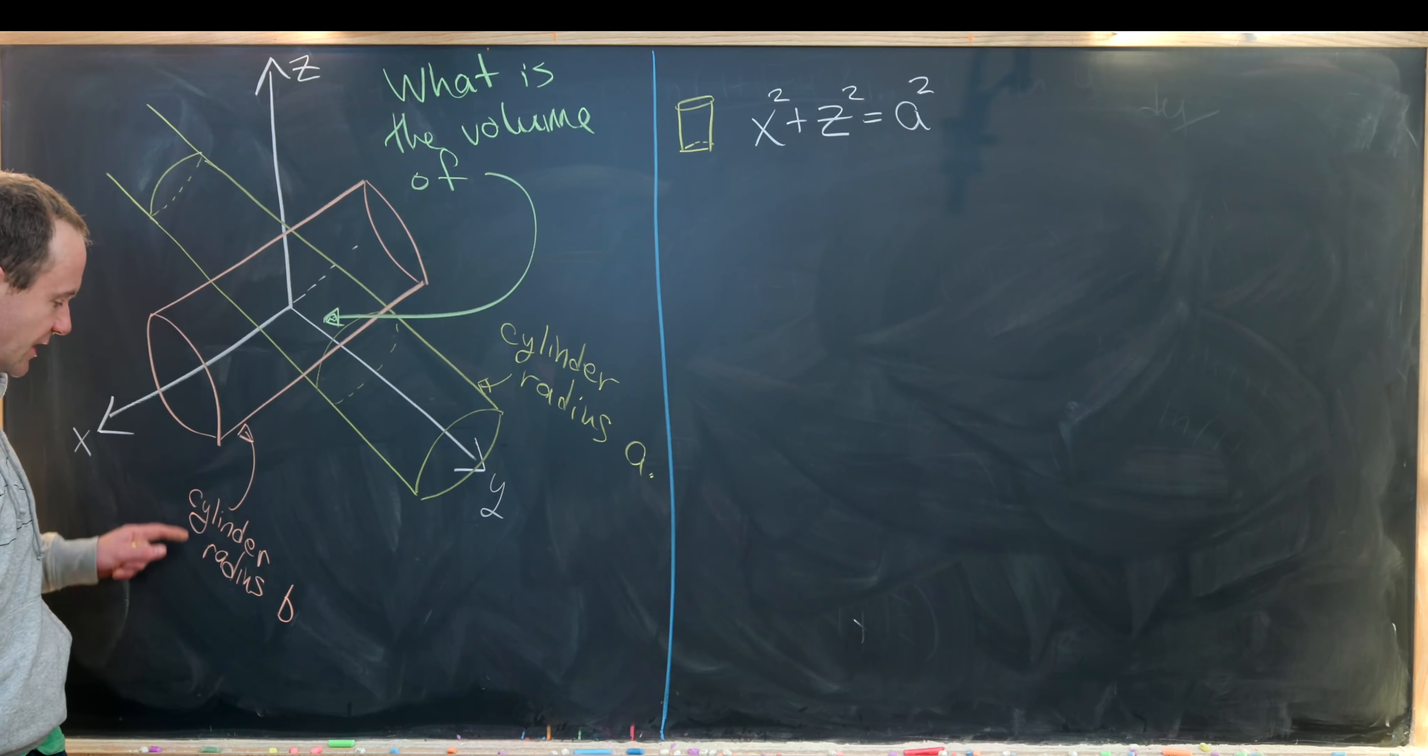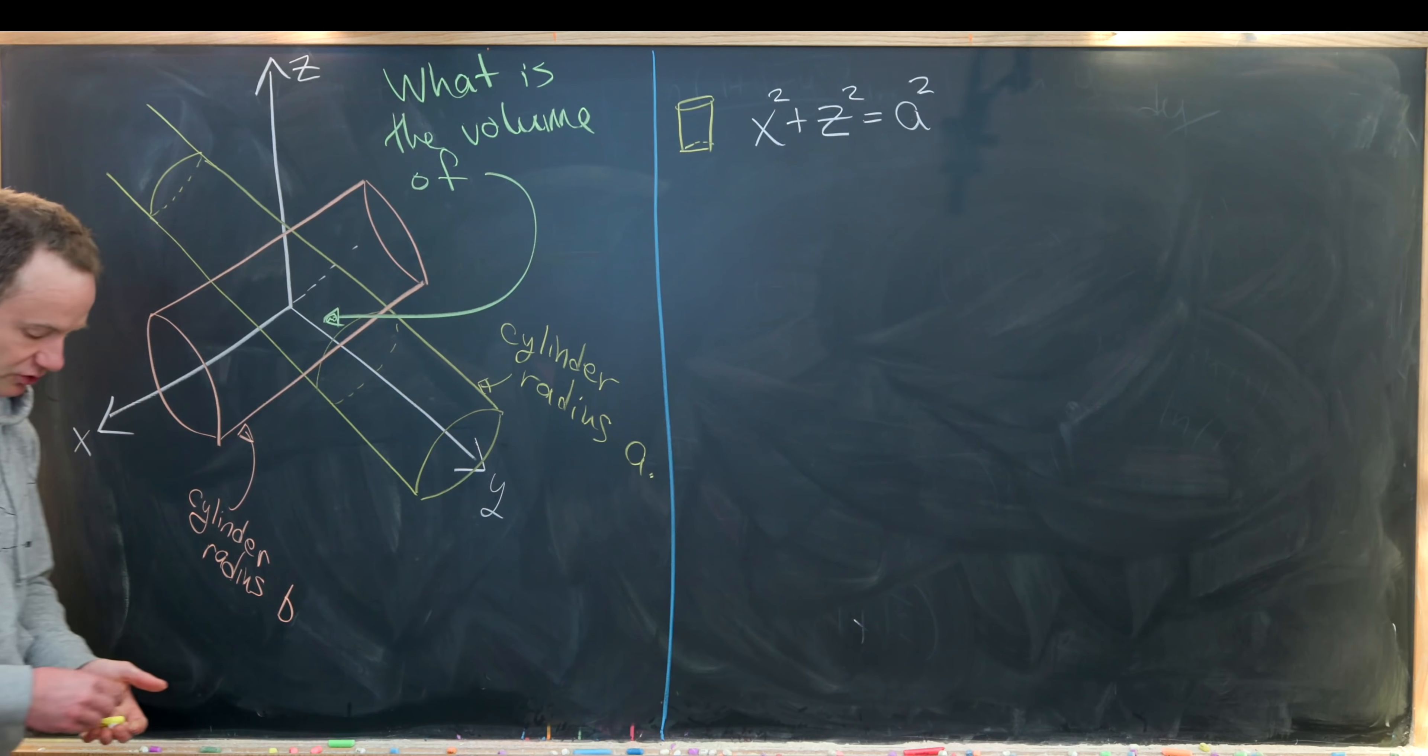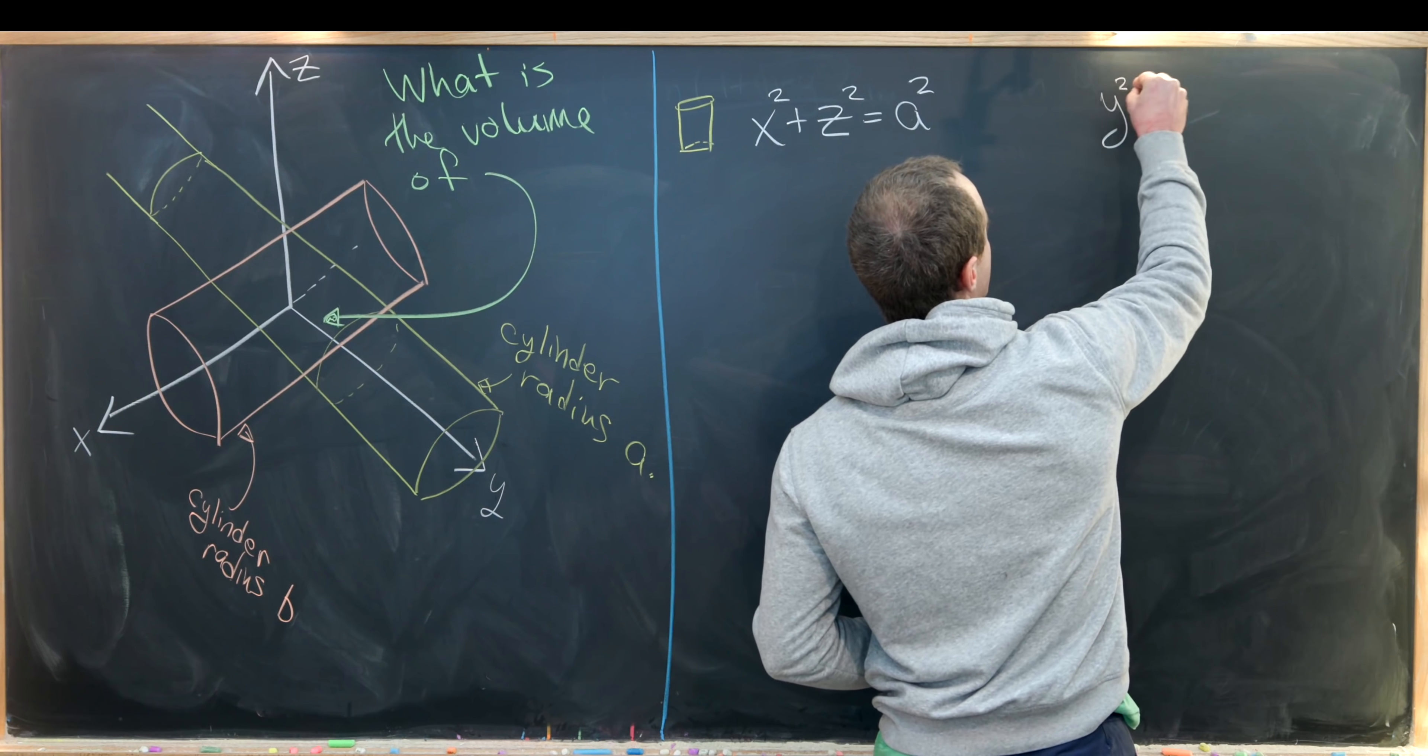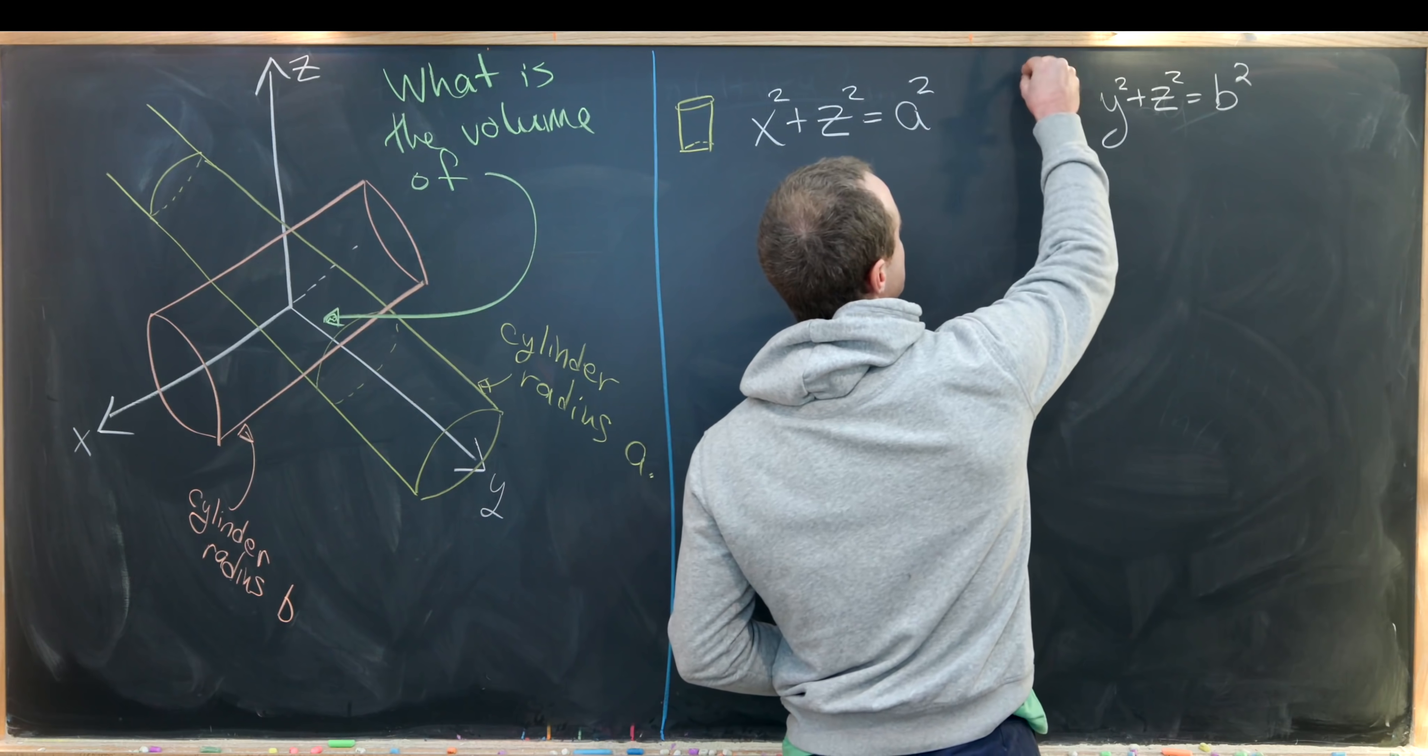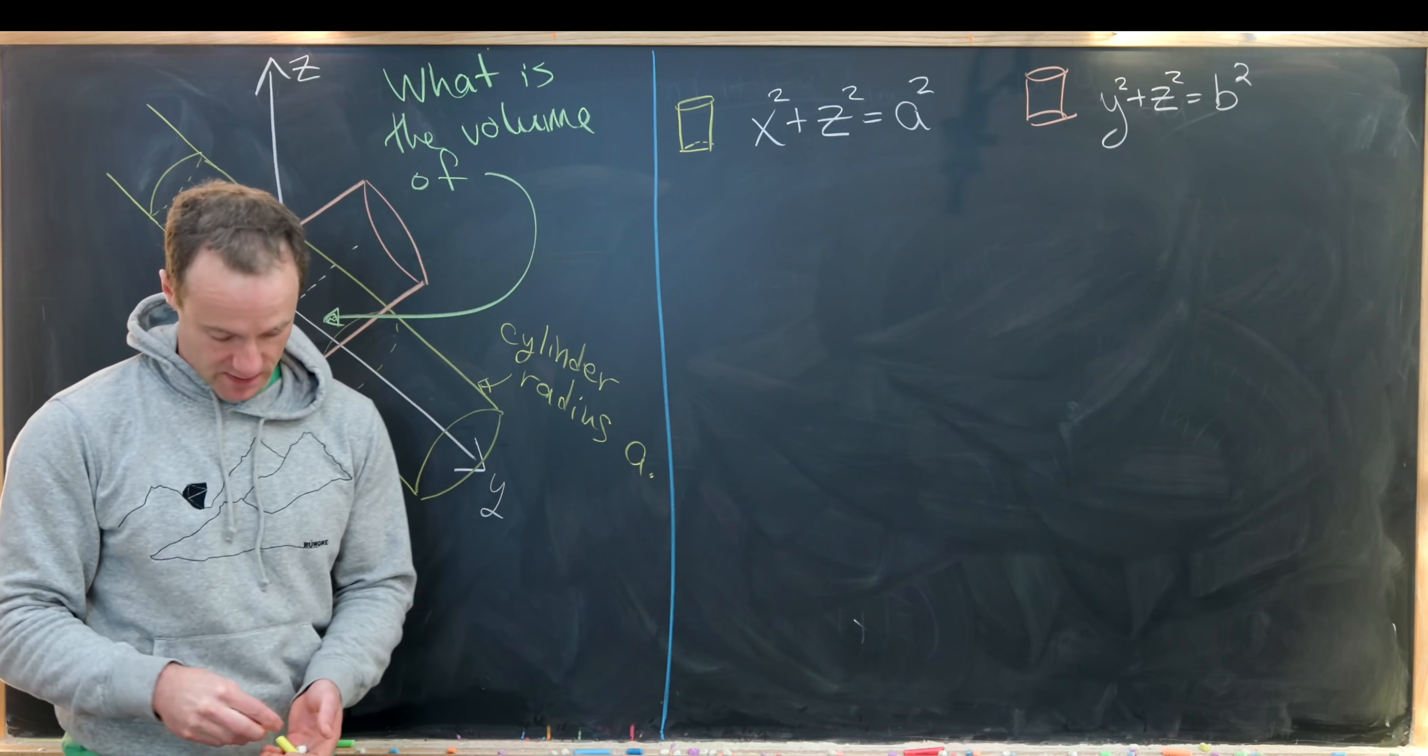Similarly, we can write down the equation of the cylinder radius b that's running down the x-axis. The x component is free to be anything, but the y and z components have to be along this circle. So I can write it down as y² + z² = b². Again, because it's a circle of radius b in this case.